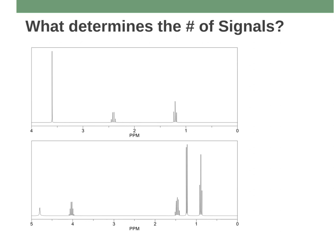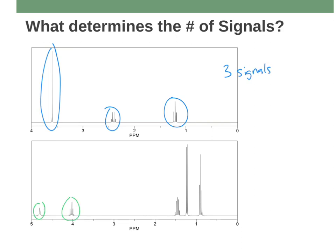I have two spectra here — one on top, one on bottom. If I look at the one on top, I see three signals. If I look at the one on the bottom, I see five signals. That observation of three versus five is enough to help me start to distinguish between which molecules might possibly lead to these spectra. It gives me some information and it's super easy to figure out — all you have to do is count, and relate the number of signals to the number of hydrogens and their chemical environment.